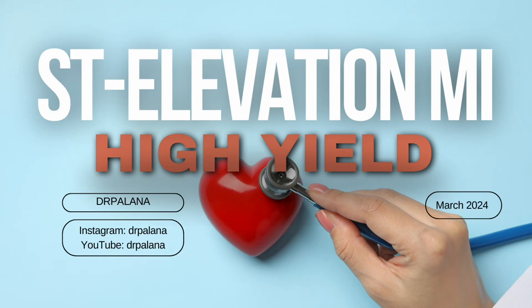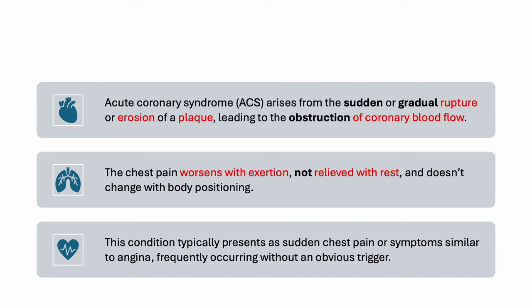Today we will be discussing ST elevation MI high yield concepts. Acute coronary syndrome arises from sudden or gradual rupture or erosion of a plaque leading to obstruction of coronary blood flow. The chest pain worsens with exertion, is not relieved with rest, and doesn't change with body positioning. This condition typically presents as sudden chest pain or symptoms similar to angina, frequently occurring without any obvious trigger.